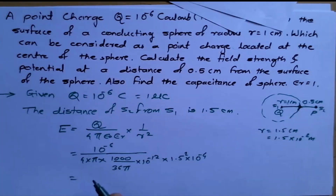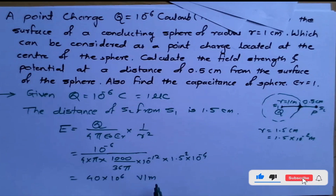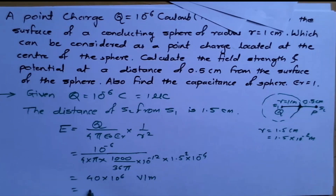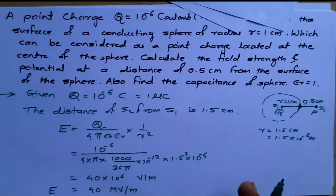E is equal to 40 × 10⁶ volts per meter, which can also be written as 40 megavolts per meter. This is the electrostatic field strength at that particular point P.